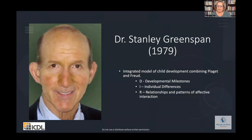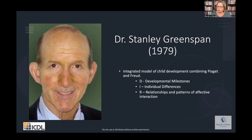When he brought this model about, roundabout the late 70s — of course he was working on it longer than that — that's kind of when things started running for him. He combined thoughts that came from Piaget and thoughts that came from Sigmund Freud, and arrived at the D, the I, and the R: D for developmental milestones, I for individual differences, and R for relationships. You can mobilize the child's relationships by using the developmental milestones through acknowledging and understanding their individual differences.